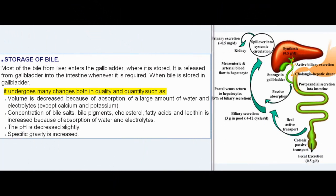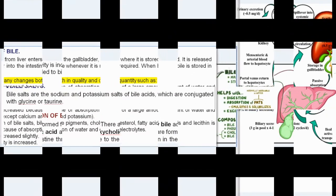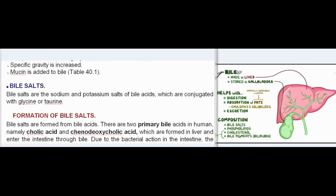Most of the bile from the liver enters the gallbladder, where it is stored, and is released into the intestine whenever required. When bile is stored in the gallbladder, it undergoes changes: volume decreases due to absorption of large amounts of water and electrolytes (except calcium and potassium); concentration of bile salts, bile pigments, cholesterol, fatty acids, and lecithin increases; pH decreases slightly; specific gravity increases; and mucin is added to bile.